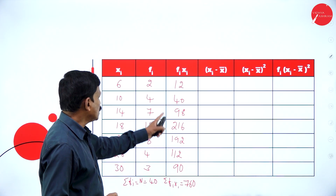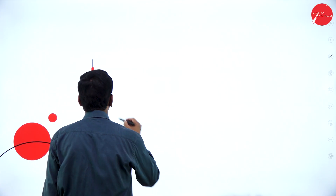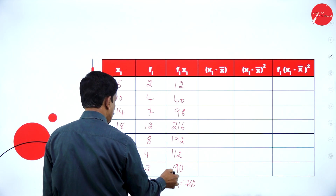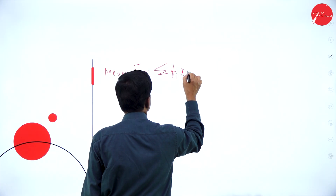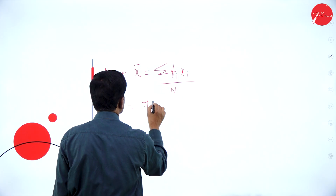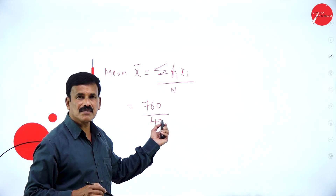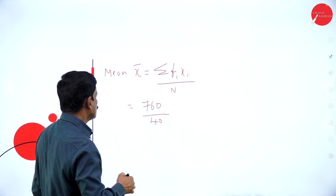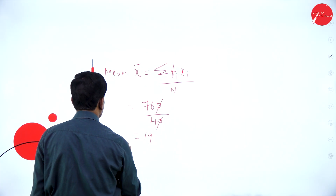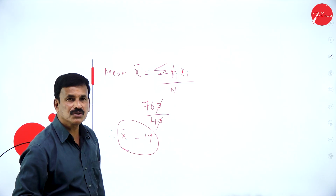Sigma fi is n equals 40 and sigma fi xi is equal to 760. Now find out x-bar mean. Therefore the mean x-bar is equal to sigma fi xi divided by n. What is fi xi? 760 divided by n, n is equal to 40. So 760 divided by 40 — the zeros get cancelled, 76 by 4 is nothing but 19. Therefore, x-bar is equal to 19.